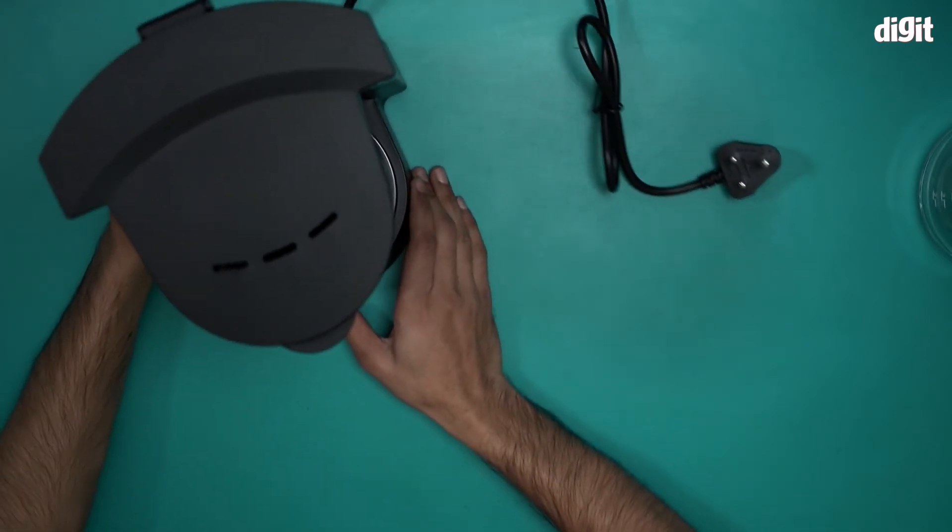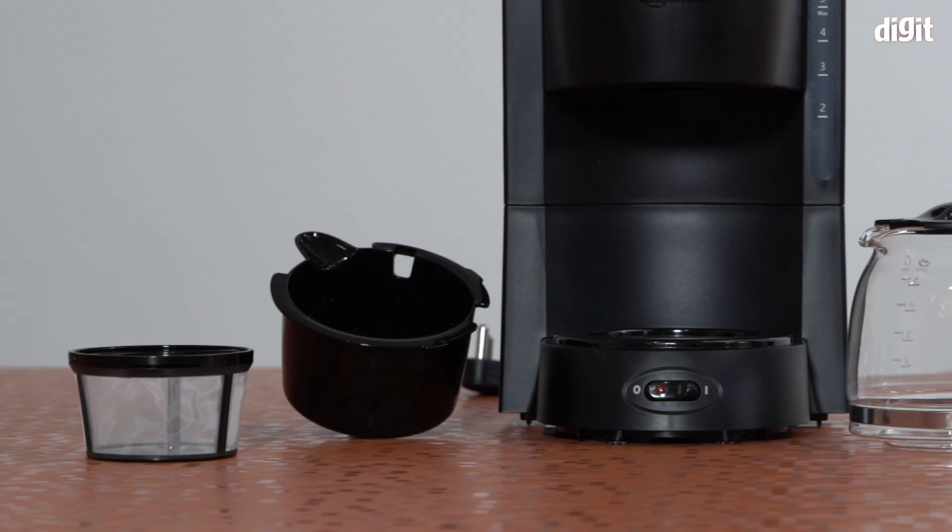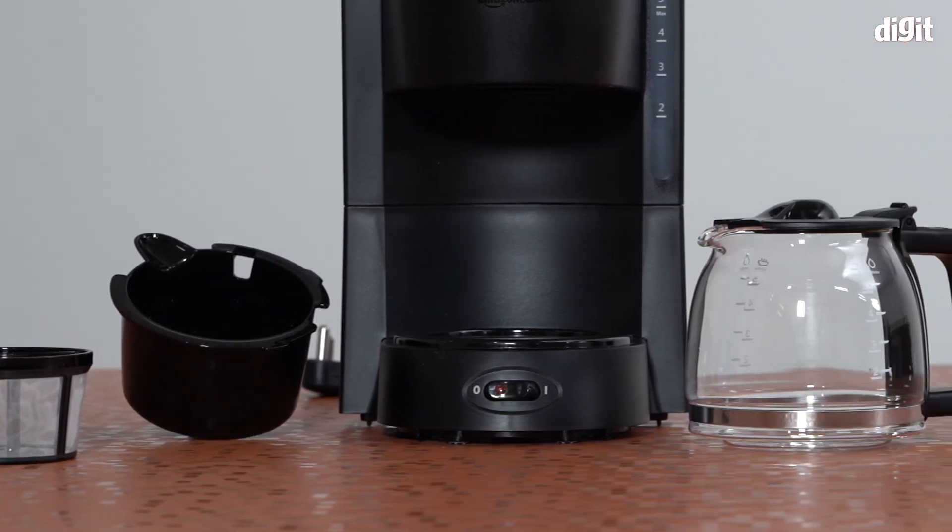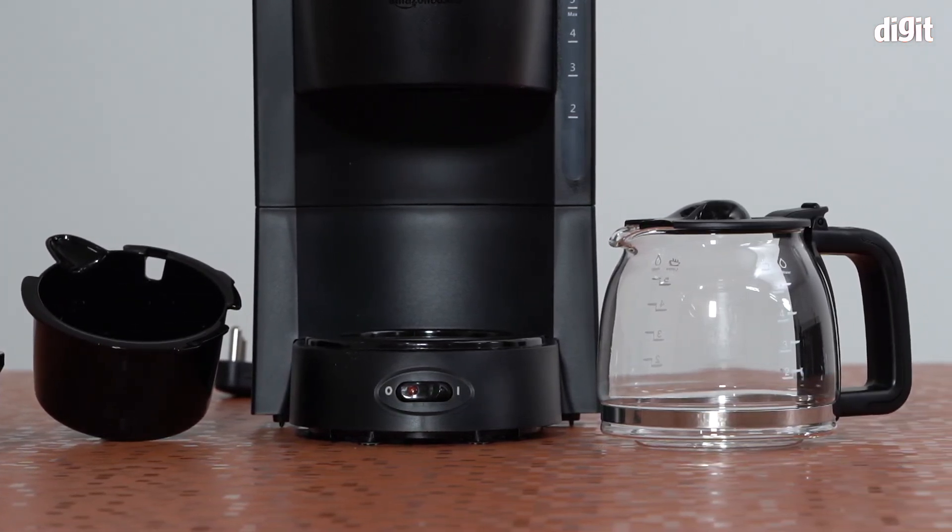And this is it. This is what you'll find inside the box containing the Amazon Basics 650 watt drip coffee maker. The model number for this coffee maker is M-A-D-O-3-B. Thank you for watching.